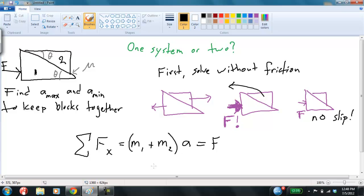And this is equal to F, and the masses are given. So, therefore, I can find, I'll just write it out here, A equals F divided by m1 plus m2. Okay. Great. That tells you the acceleration that goes with F.